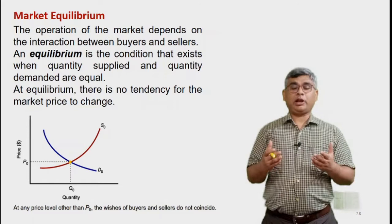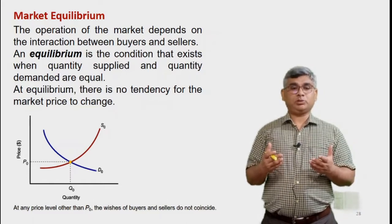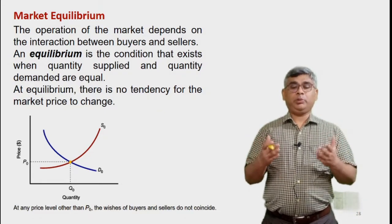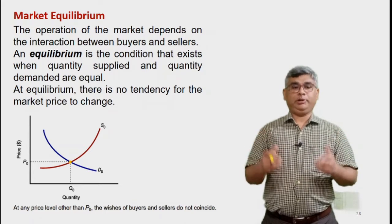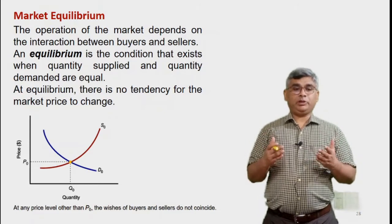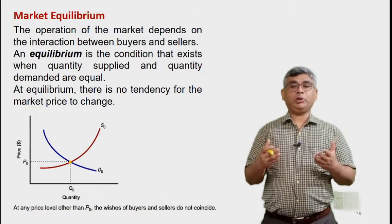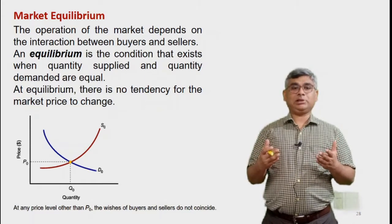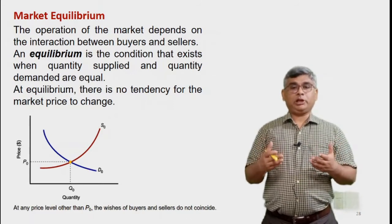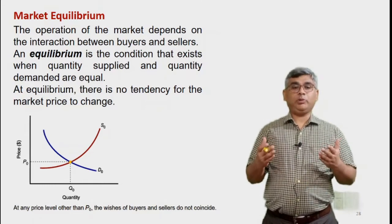Today in this lecture we will try to understand how market equilibrium is automatically restored when there is a mismatch between the supply and the demand. To recall, the point at which the supply and the demand curves intersect is called the equilibrium point, and under ideal conditions — perfect competition — the market should operate at this equilibrium point.